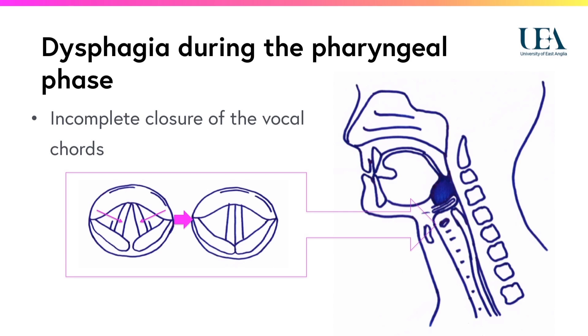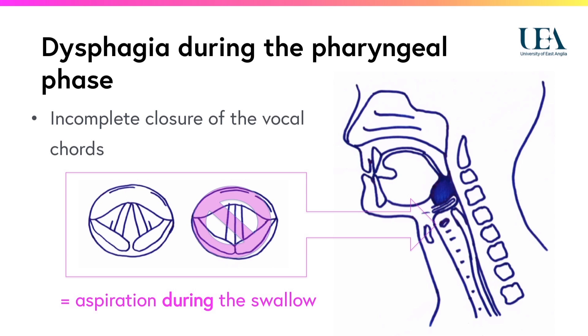Incomplete closure of the vocal cords, perhaps due to localised nerve palsy, can result in aspiration during the swallow.